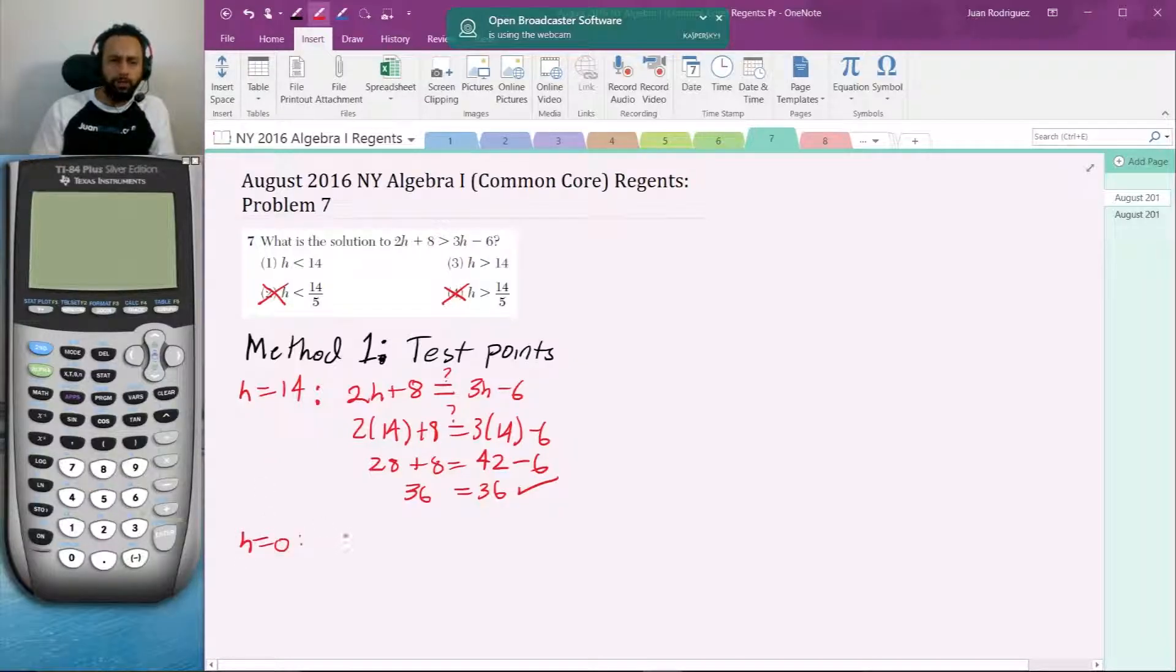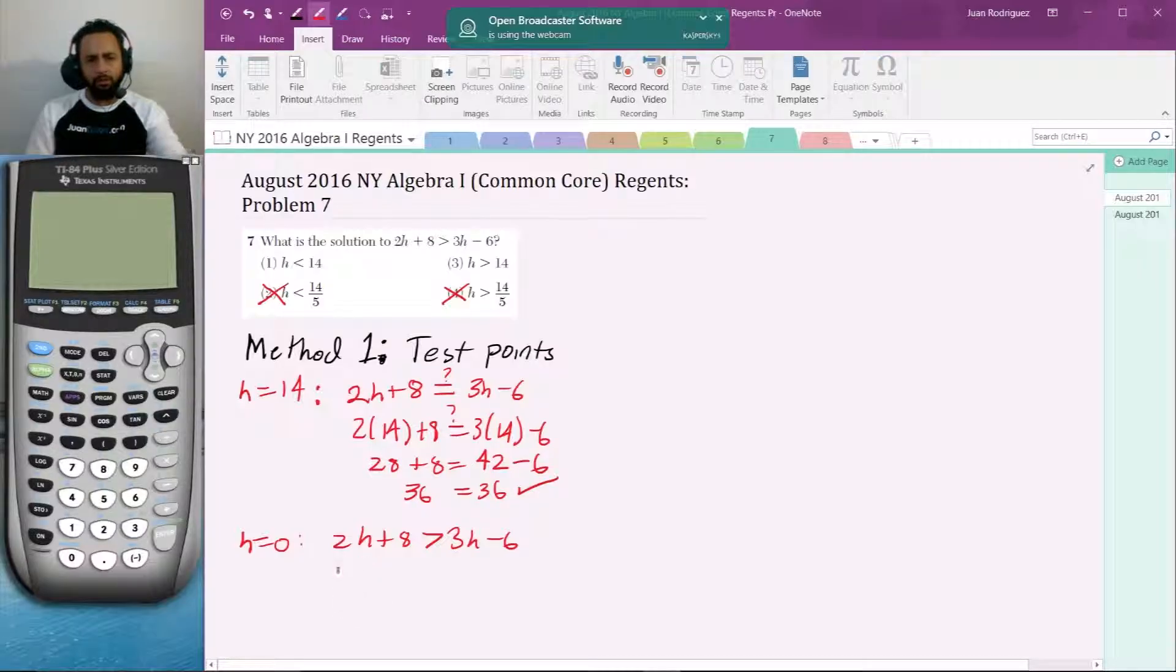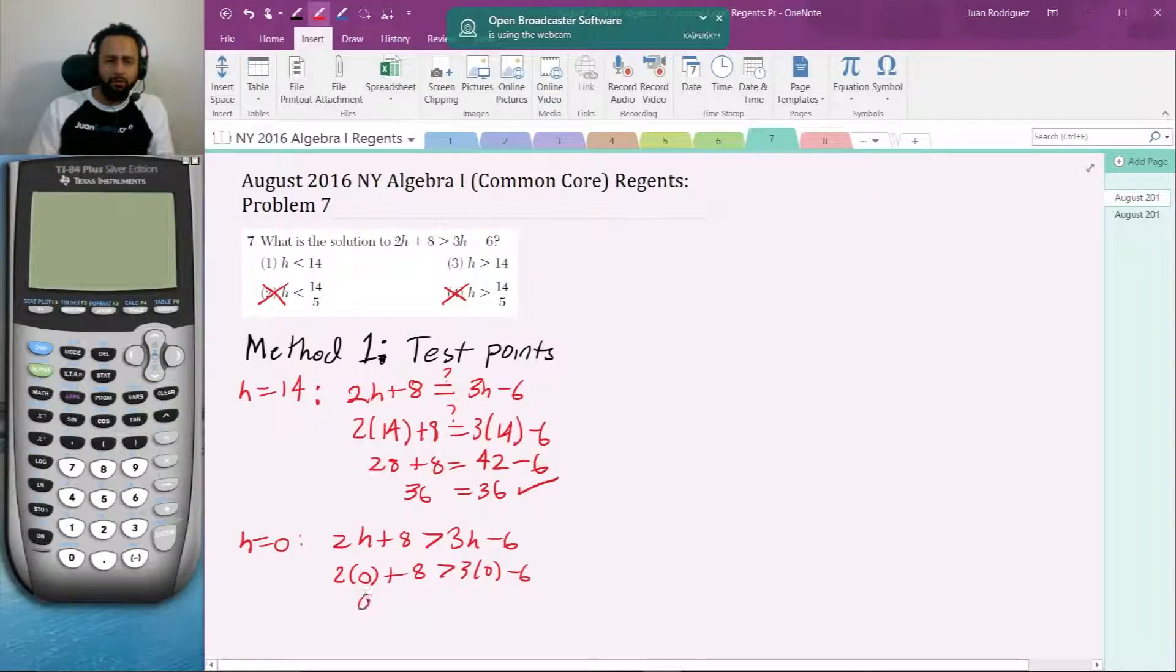If it's not part of the solution set then I would prove that H is greater than 14. So H equals 0: 2H plus 8 is greater than 3H minus 6. So 0 plus 8 greater than 0 minus 6, and 8 is greater than negative 6, which is definitely true.